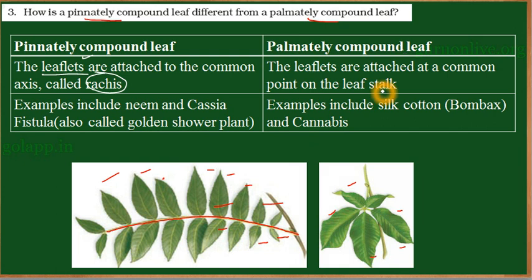Whereas in a palmately compound leaf, the leaflets are attached to one common point — from this single point, many leaves arise. So this arrangement is called palmately compound. In pinnately compound, the leaflets are attached to a common axis called rachis, from which many leaflets are formed. Examples of pinnately compound leaf are neem and fettusia. Example of palmately compound leaf is silk cotton. These are the differences between a pinnately compound leaf and a palmately compound leaf.